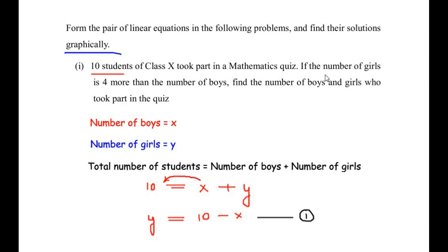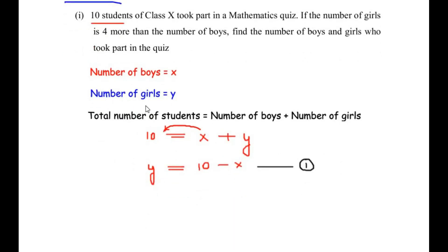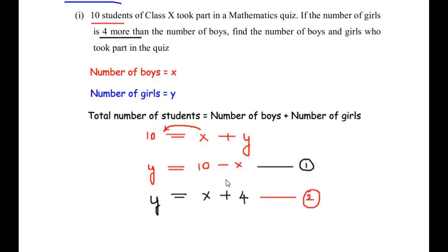The second statement says the number of girls is 4 more than the number of boys. That means y equals x plus 4, because 4 more than boys means we add 4 to the number of boys. This forms our second equation. We have to find the number of boys and girls graphically by graphing these two equations.